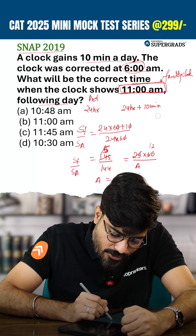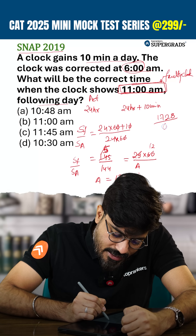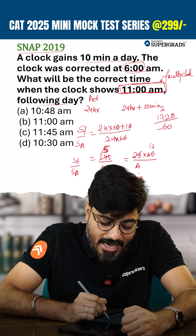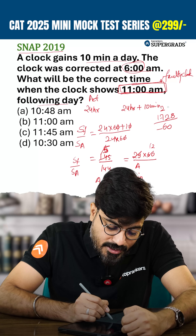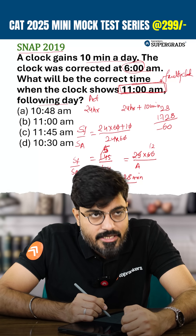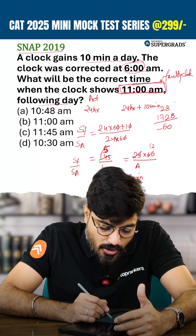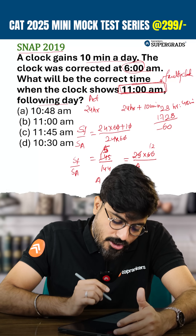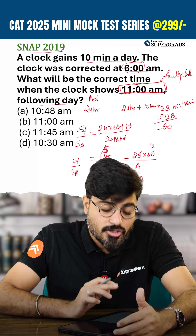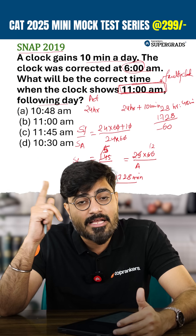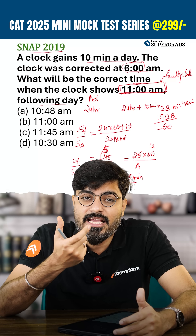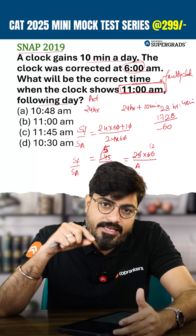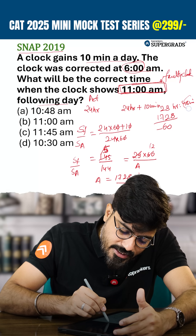Dividing 1728 by 60: 60 × 28 = 1680, leaving 48 minutes. So the actual elapsed time is 28 hours and 48 minutes. Adding 28 hours to 6 AM: 24 hours brings us back to 6 AM, plus 4 more hours gives 10 AM. Then adding 48 minutes gives the answer: 10:48 AM.